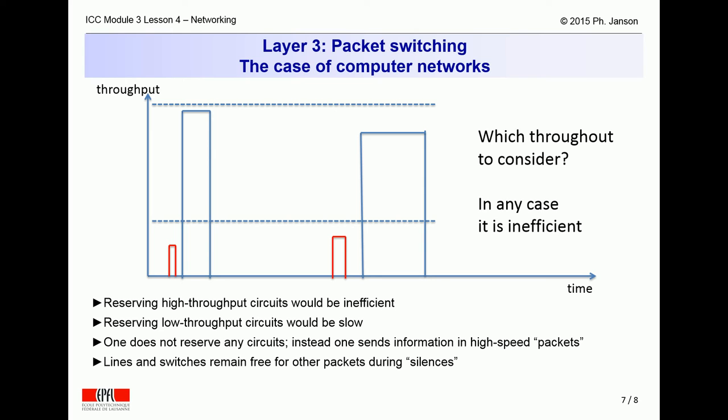It would thus be very difficult and very inefficient to dedicate end-to-end electrical circuits for two computers to communicate. Allocating large bandwidth circuits would be inefficient due to the waste during the silences, but allocating a narrow bandwidth circuit would be hopelessly slow for the computers and their waiting users. Thus, one does not reserve any circuits, but instead one transmits messages in bursts, called packets, over wide-band cables and radio waves.